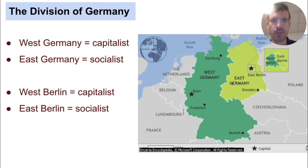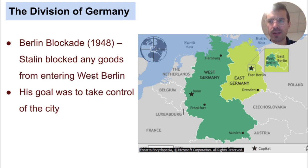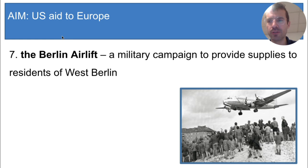In 1948, Stalin decided to cut off all supplies to West Berlin, and this was called the Berlin Blockade. Stalin hoped that the U.S. would not risk a fight over the city and that people in West Berlin would be forced to give in to Soviet control, so he would take control of all of Berlin. But in response, the U.S. undertook the Berlin airlift — a military campaign that used airplanes to provide food and other supplies to residents of West Berlin. Airplanes took off from West Germany around the clock, flew into East Germany, and dropped supplies over West Berlin. The airlift continued for over a year until Stalin gave in and lifted the blockade. It was a victory for the U.S.